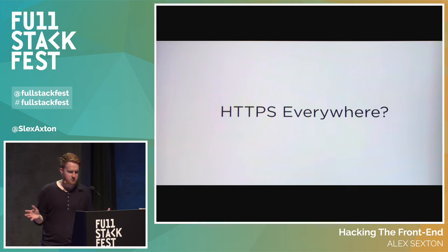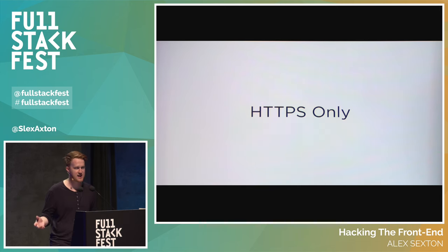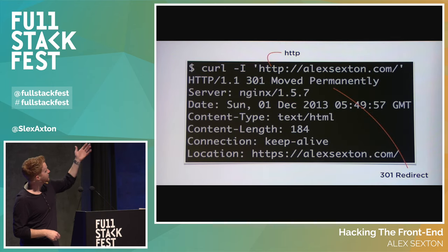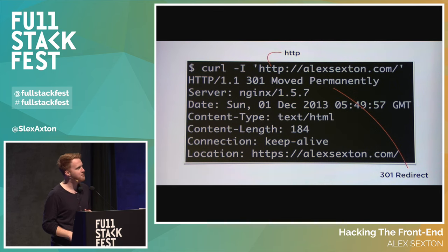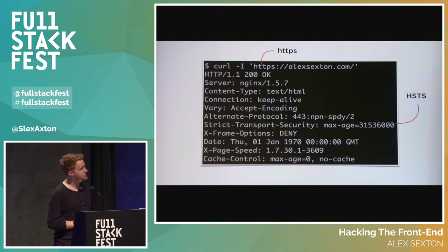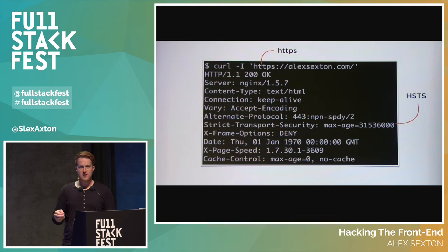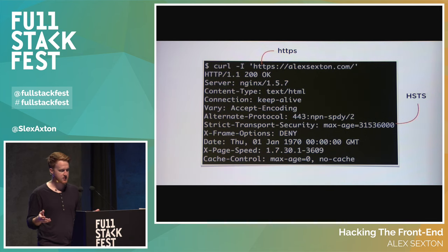HTTPS Everywhere is something you should be using, but I want HTTPS only — you shouldn't have an HTTP version of your site. There's no reason to have it; it's not slower, and you can get HTTPS certificates for free now. If someone hits your HTTP site, 301 redirect them to HTTPS. Once you do hit the HTTPS site, add Strict Transport Security — HSTS. Even if someone tries to go to the HTTP page, immediately bump them over to HTTPS without even letting the request go through. Set a max age on it because you're never serving anything over HTTP anymore.